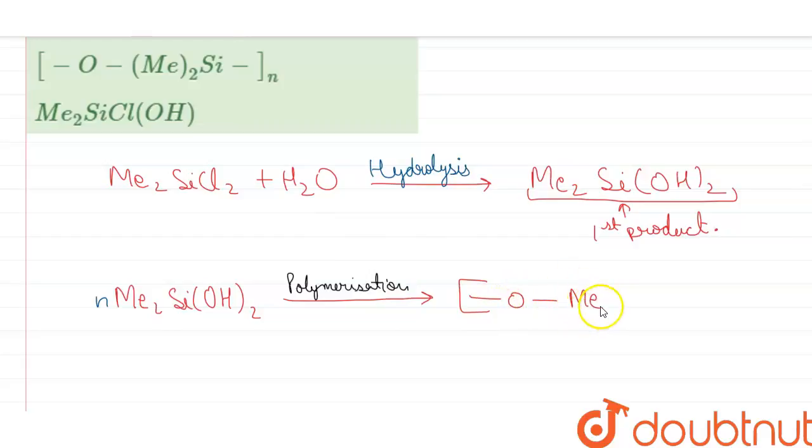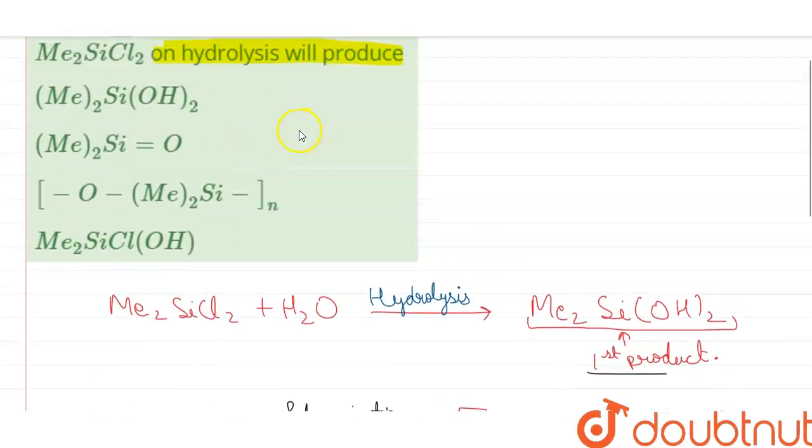Which is [-O-Me2Si-]n. So the final product is the polymer formed by this. This is a typical question in which the student marks the option first primary product, but the final product formed is the polymer. So the correct option is option C with oxygen present over here. Thank you.